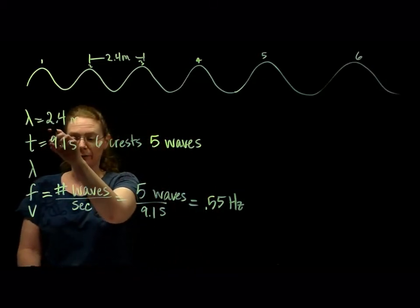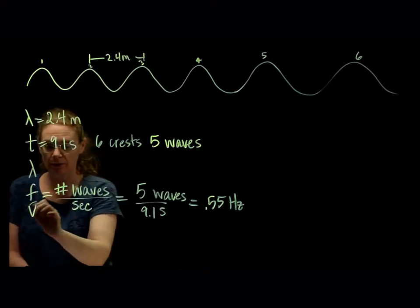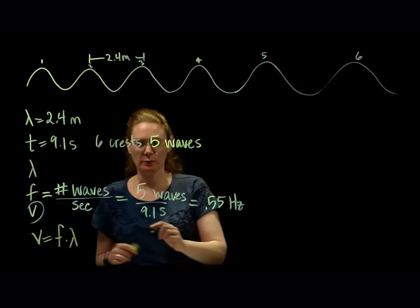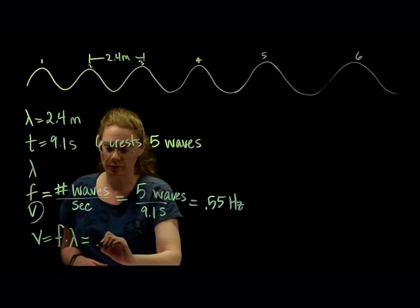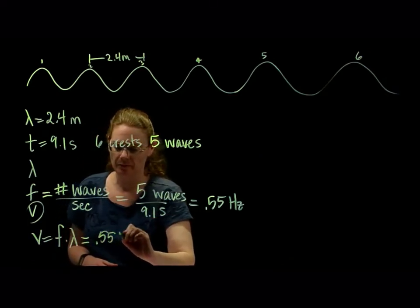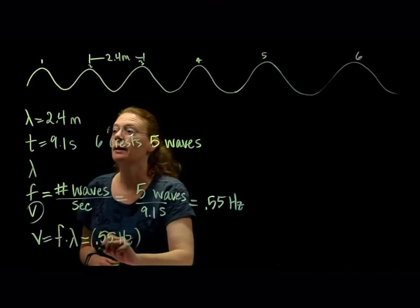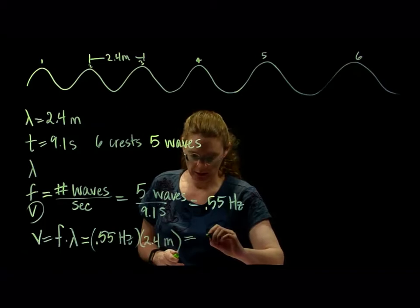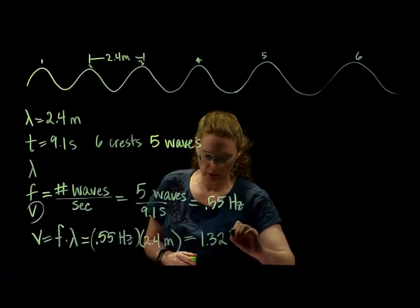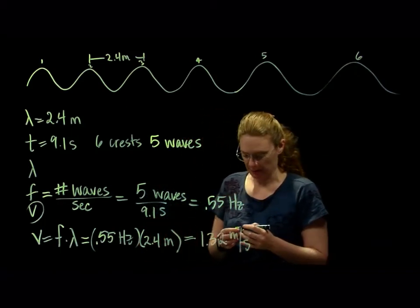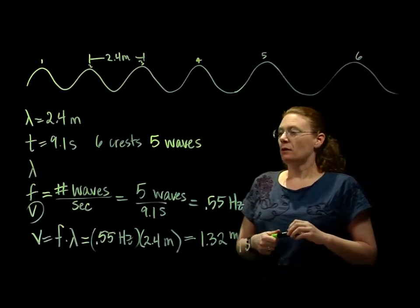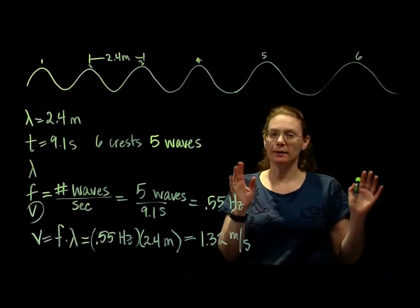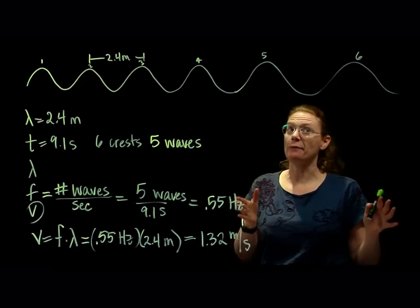We know the wavelength, so velocity we can just get from the wave equation. Velocity equals frequency times wavelength. Our frequency is 0.55 hertz and our wavelength is 2.4 meters, which gives us a speed of 1.32 meters per second. We knew 6 crests went by — that's not 6 waves, it's 5 full waves — and then we figured everything else out.